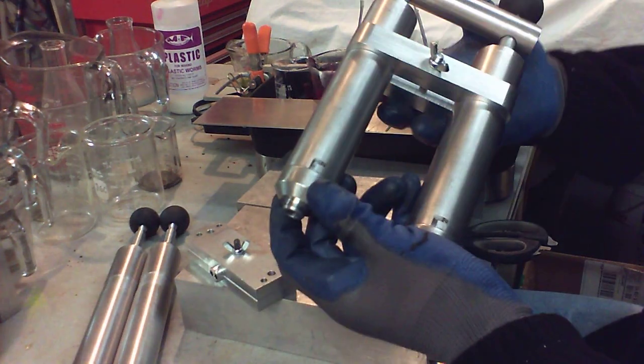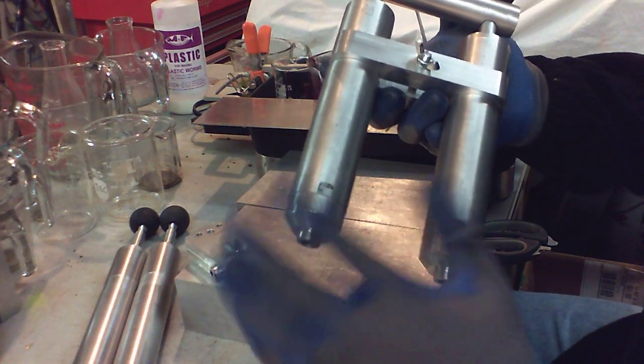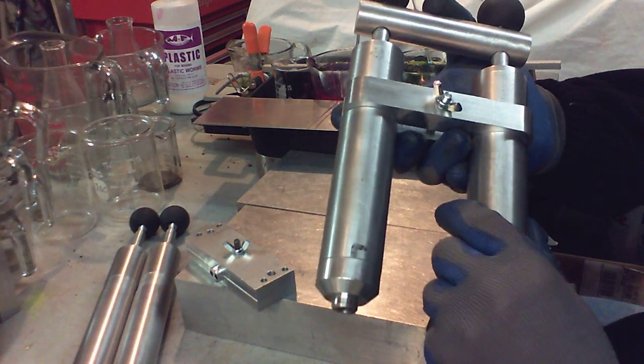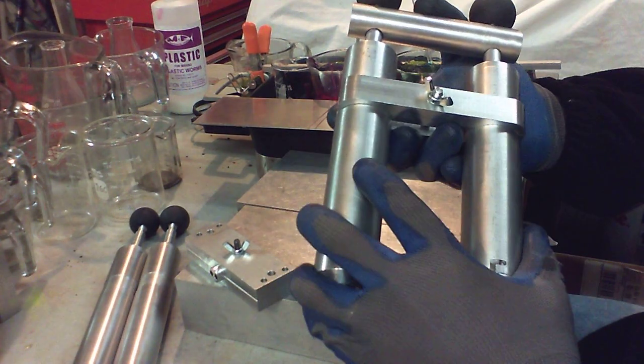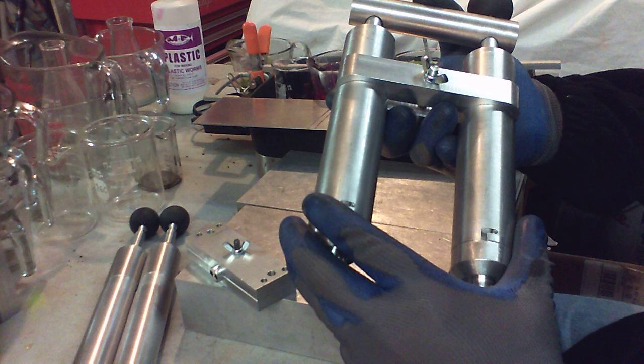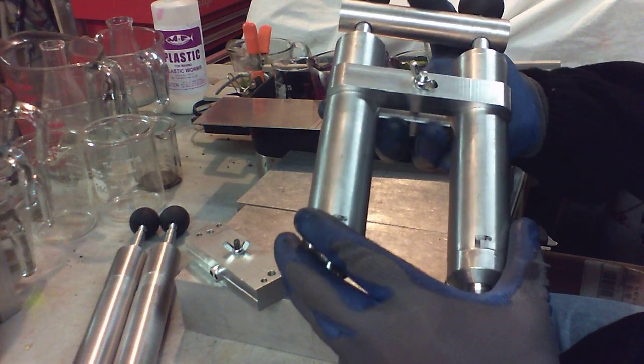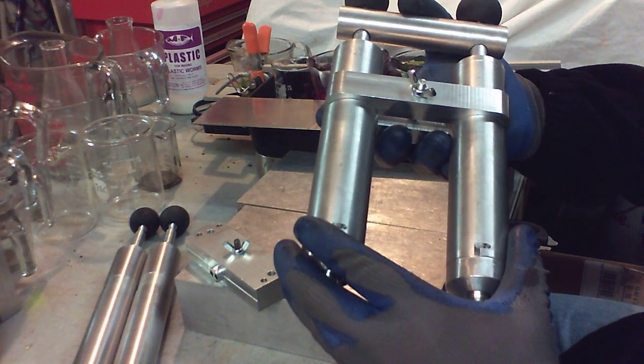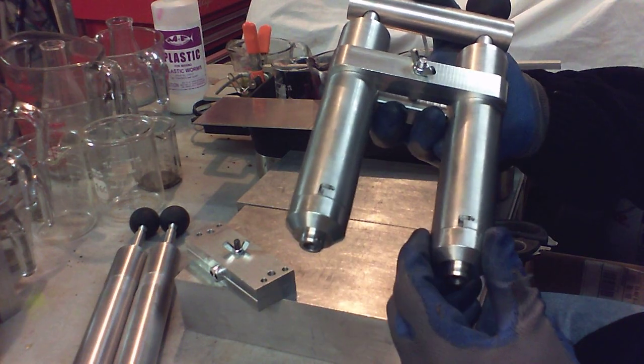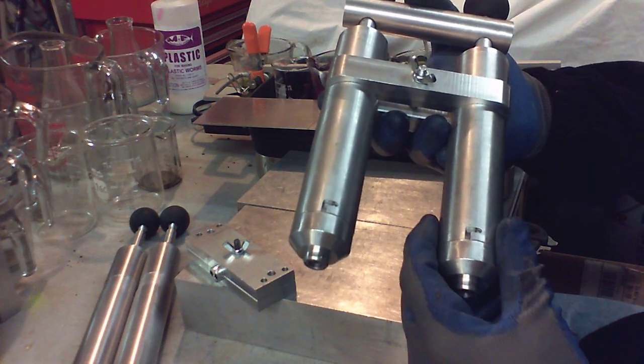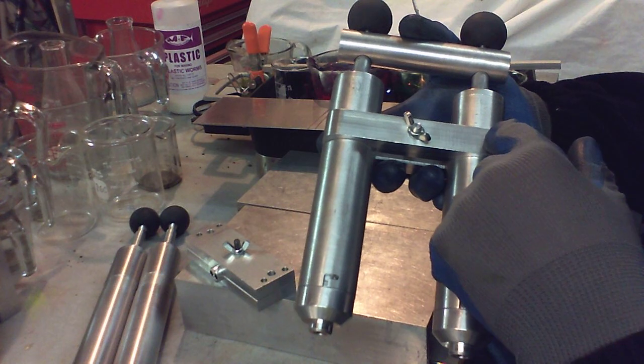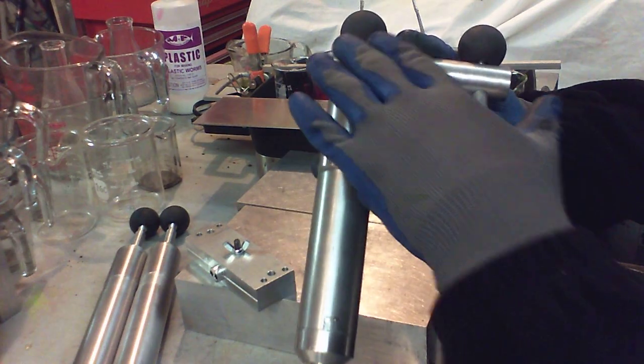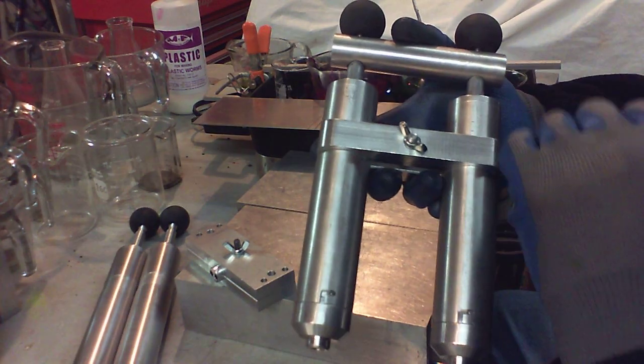And the twinjector, actual twinjector unit is two three ounce injectors. It gives you a total of six ounces. That's a lot of plastic. If you've got a lot of molds, that's probably not enough. But I don't have a lot of molds. I have a lot of variety. It comes with the crossbar to hold the barrels together and the crossbar to hold the plungers together.